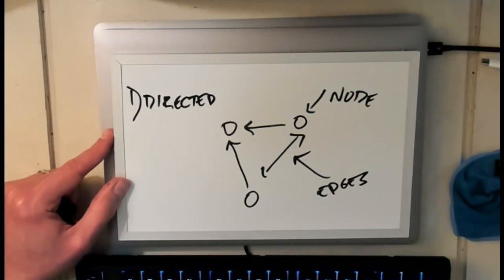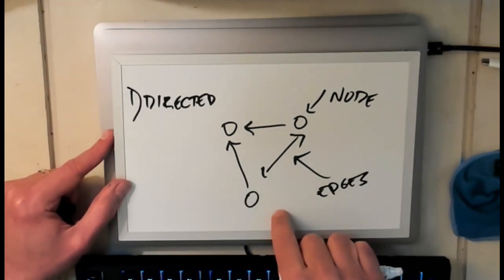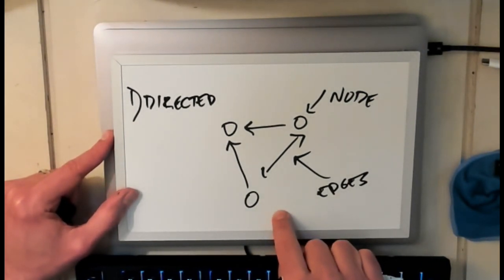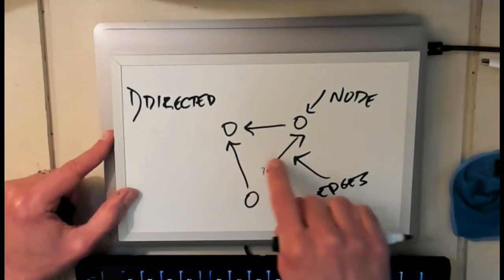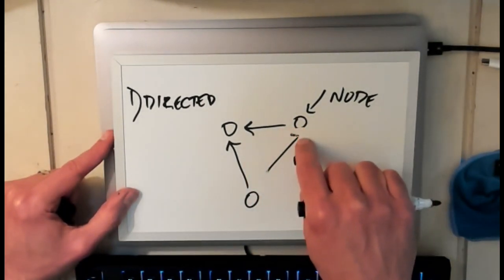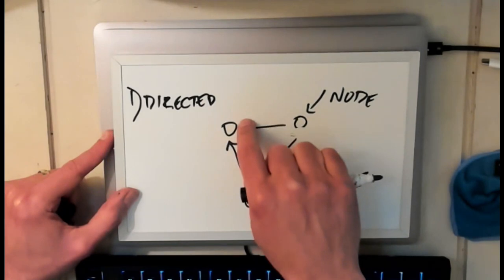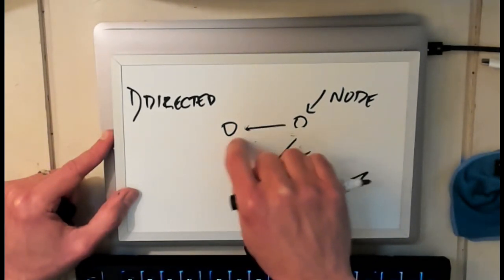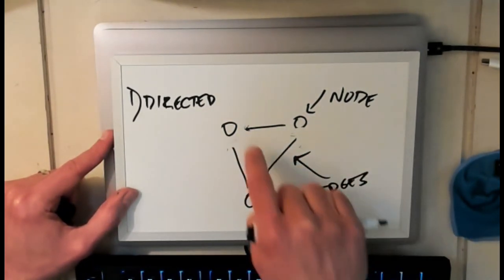You can see that the properties of directed graphs are to some degree quite a bit more interesting. Well I shouldn't say more interesting but directed graphs are more complicated than undirected graphs. So even traversal through a graph, if you take the directions off this graph, I think we can agree that this graph is connected.